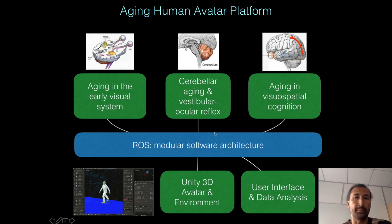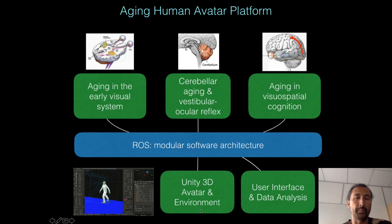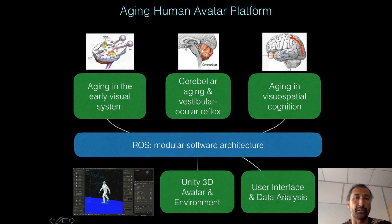Each of these components can be written in a different programming language like Python, Matlab, or C, and the ROS backbone passes messages between them. The interface modules include the 3D avatar and environment model, which visualizes avatar movements in the environment, and a user interface and data analysis module, which is the control mode from which a user can start and stop a simulation, load parameters of the avatar, and extract data for analysis.